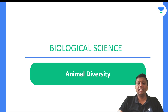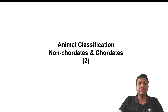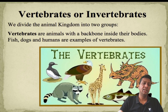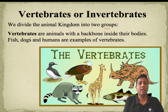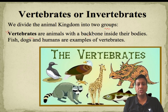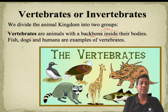This is biological science and I am discussing the second part of animal diversity. In the previous lecture I finished the non-chordate portion; in this video I will cover the chordates part. Chordates and non-chordates, vertebrates and non-vertebrates, share nearby similar characteristics. The animal kingdom is divided into two groups: vertebrates and non-vertebrates. Vertebrates are those which have a backbone or vertebral column — examples include fishes, dogs, and humans.